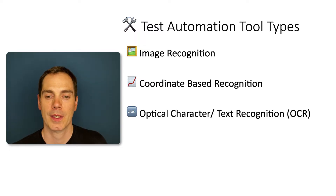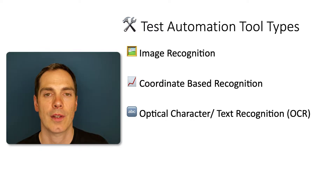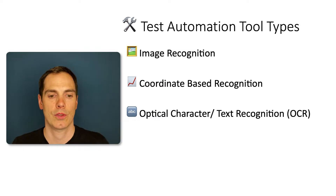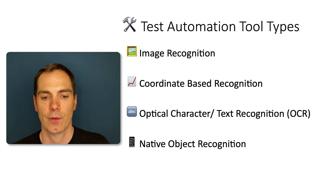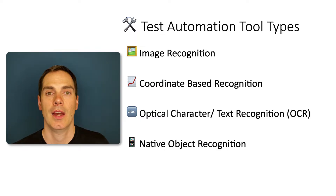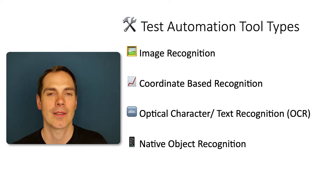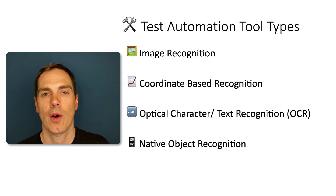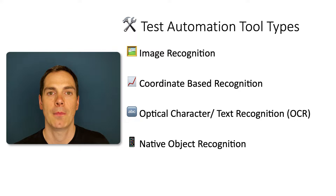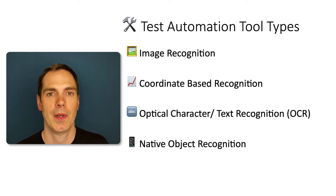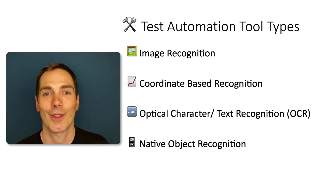Then we have optical character or text recognition — these tools check for text on the screen and identify elements based on that text. And of course we have native object recognition, which uses native identifiers of buttons, text, and control elements. As you can imagine, this is the most stable approach and also the most common one that modern mobile testing tools use today. I just wanted to make sure you've heard about the other approaches to give you more knowledge in this field.